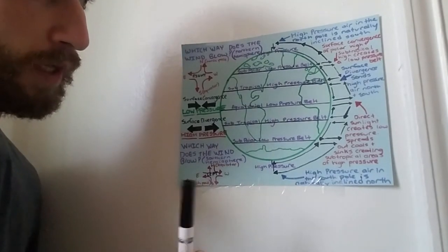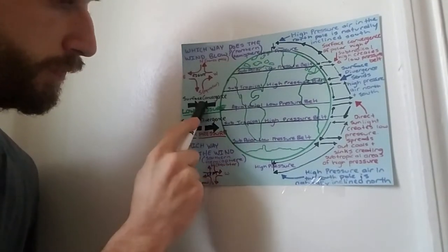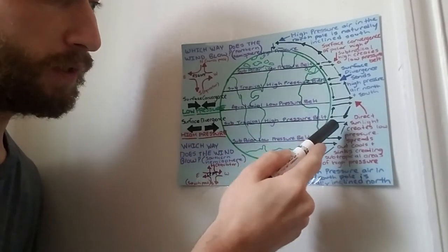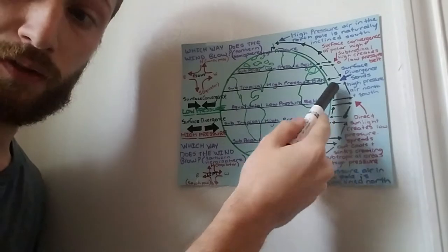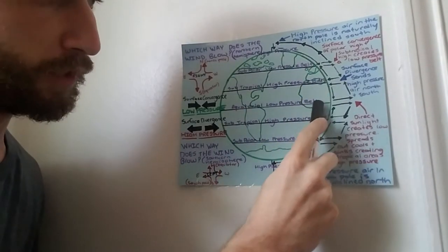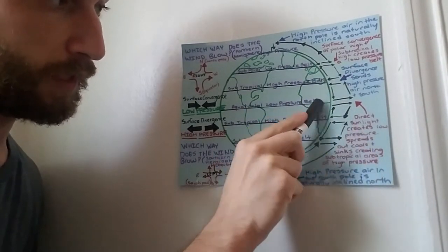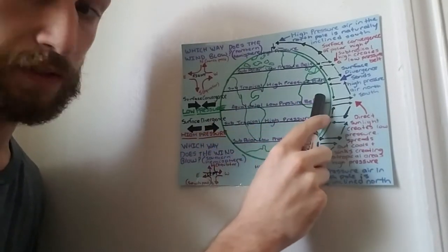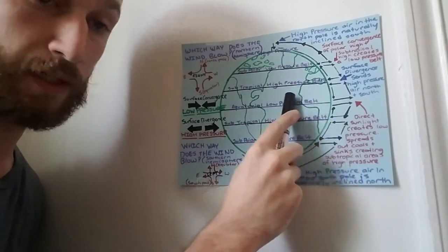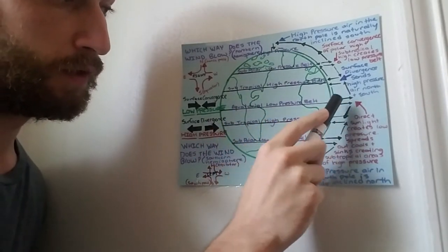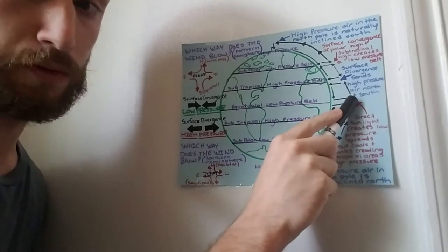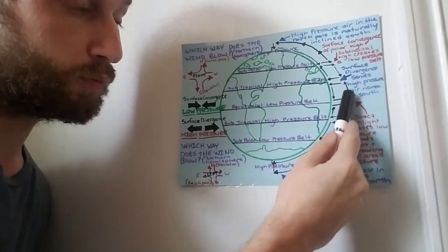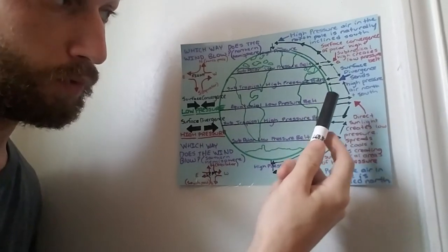Pressure belts are caused by three things: surface convergence, surface divergence, and convection. Convection currents cause rising air at the equator because the equator is consistently hot and gets a lot of direct sunlight. That rising air spreads out as it reaches the upper levels of the troposphere in an area called the tropopause, and as that air becomes cool it sinks again.